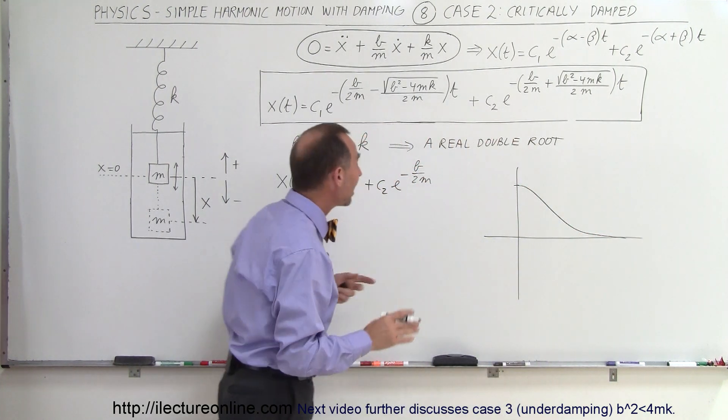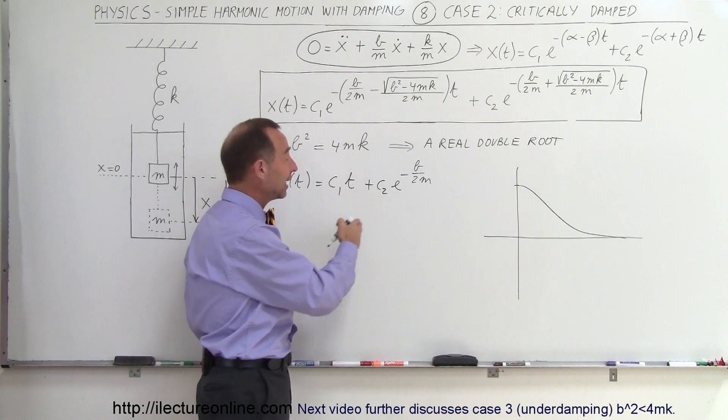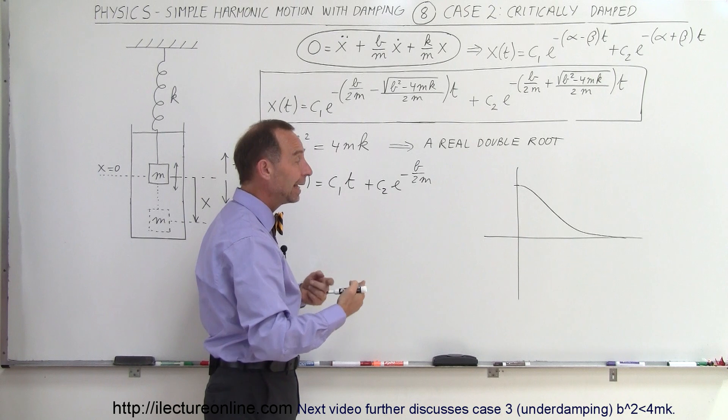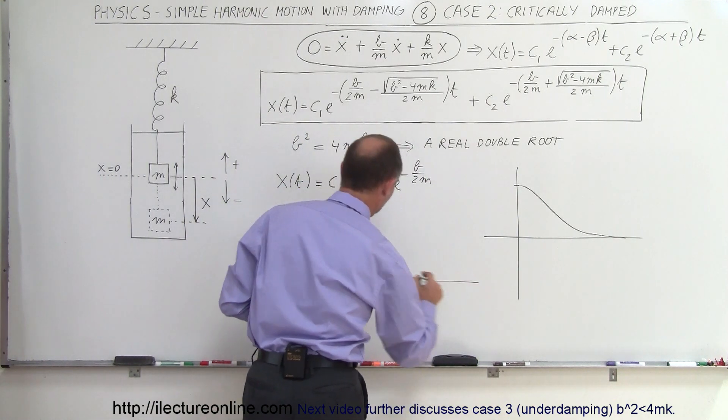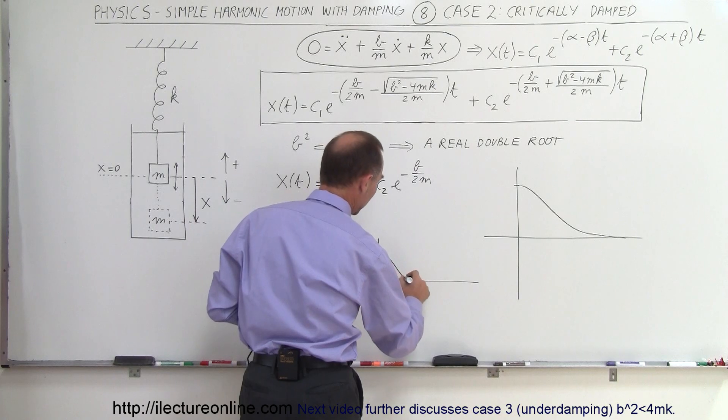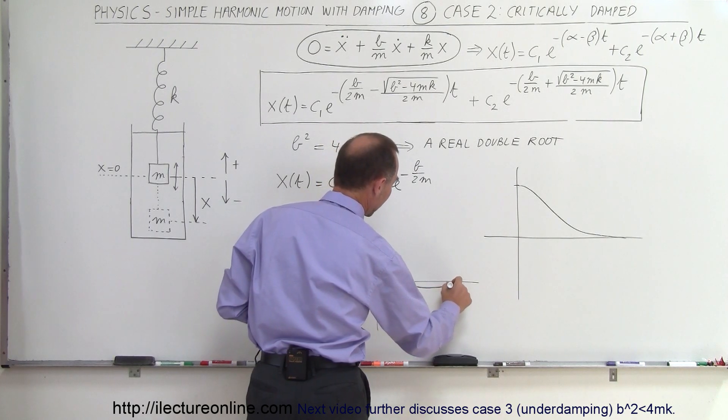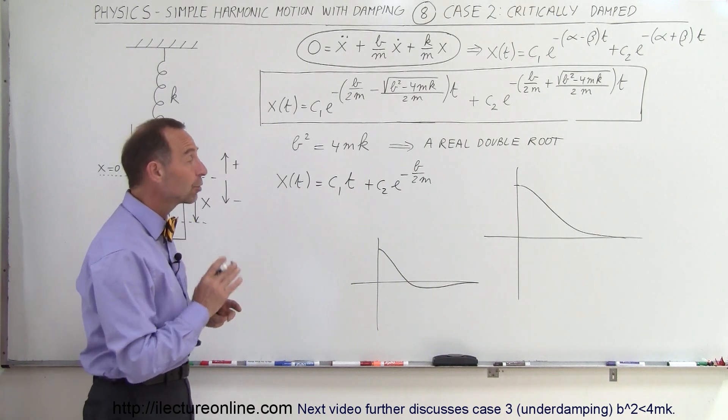But depending upon the value of c1 and c2, because for example c1 could be negative and c2 could be positive, it is possible that we may have a damping effect that looks like this instead, where we come and we drop down very quickly and overshoot and then come in and reach the equilibrium point like that. So that is possible even with critical damping.